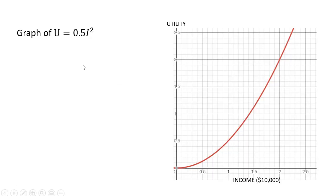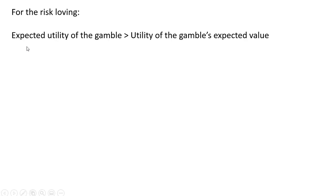If we were to take a graph of that utility function, we get something like this. For the risk loving individual, the expected utility of the gamble is greater than the utility of the gamble's expected value. Let me show you what I mean by this.